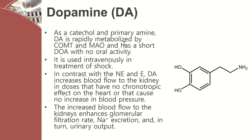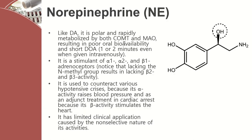For norepinephrine, like dopamine, it is polar, rapidly metabolized by both COMT and MAO, has poor oral bioavailability, and a short duration of action — even one to two minutes when given intravenously. It's a stimulant of various alpha and beta-1 receptors, but it lacks the N-methyl group, which results in lacking beta-2 and beta-3 activity. It is used to counteract various hypotensive crises but has limited clinical application due to the non-selective nature of its activities.